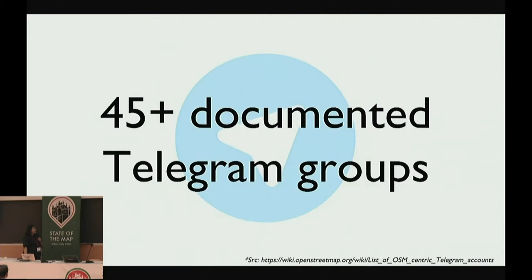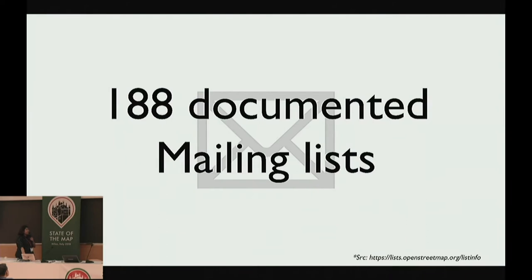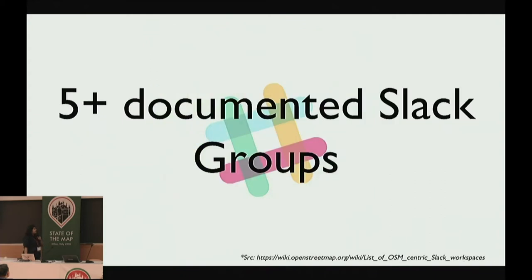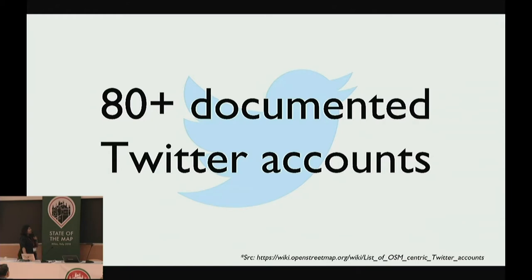We have 45 documented Telegram groups — there are a lot of communities who use Telegram, and we are using Telegram for this conference as well. We have 188 documented mailing lists, 82 forum channels. One thing which was super stunning was that there are so many threads in the forum channels which have more than 10,000 replies, so we can assume we have a good audience there as well. There are 5 plus documented Slack groups and 80 plus documented Twitter accounts.